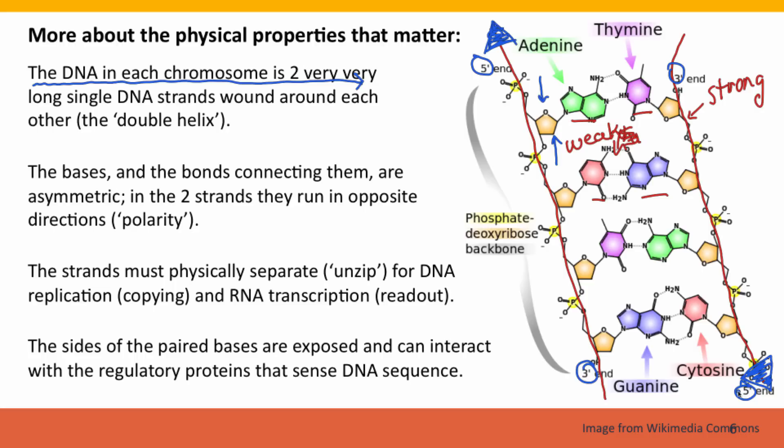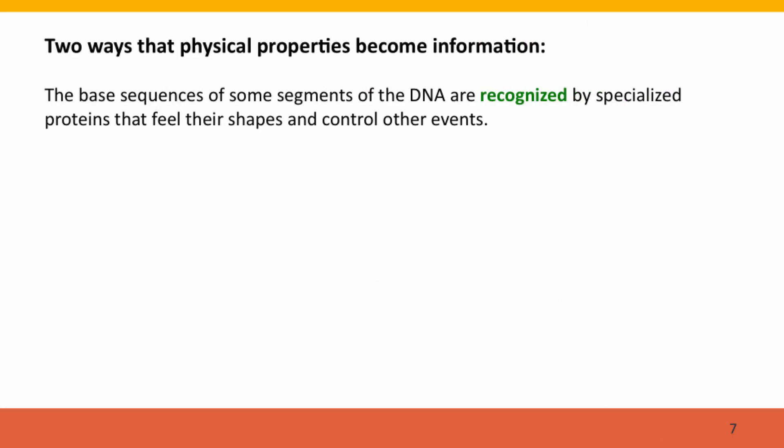Now, one final feature of the double helix when the two DNA strands are wound around each other is that even though the bases are interacting with each other in base pairs, the sides of the bases are still exposed on the side of the double helix, like the sides of a rope. So it's possible just by looking at the sides of the DNA for a protein to sense which bases are present in which order.